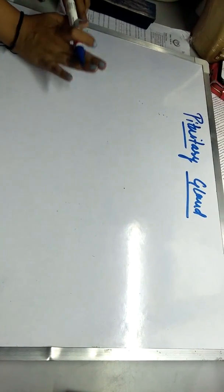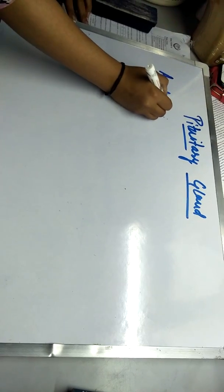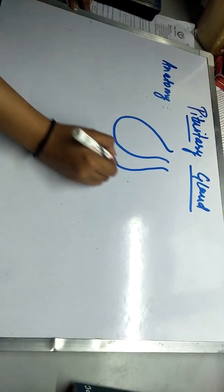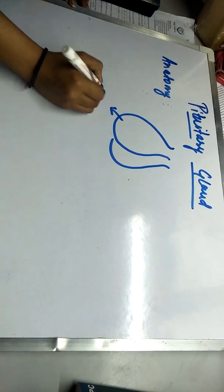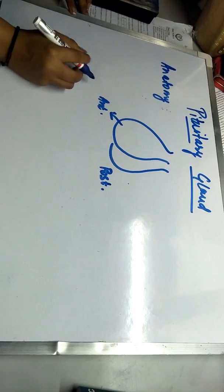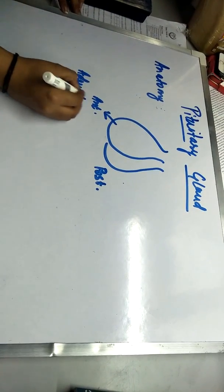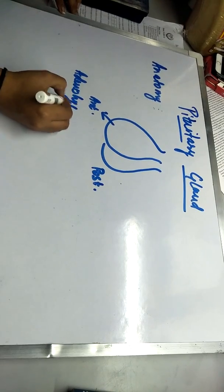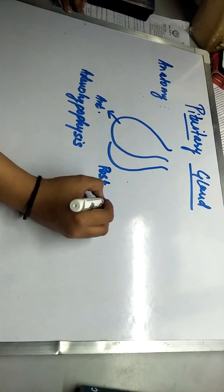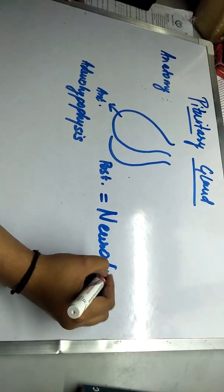First, we should know the anatomy. The pituitary is shaped such that the anterior part is called the adenohypophysis and the posterior part is called the neurohypophysis.